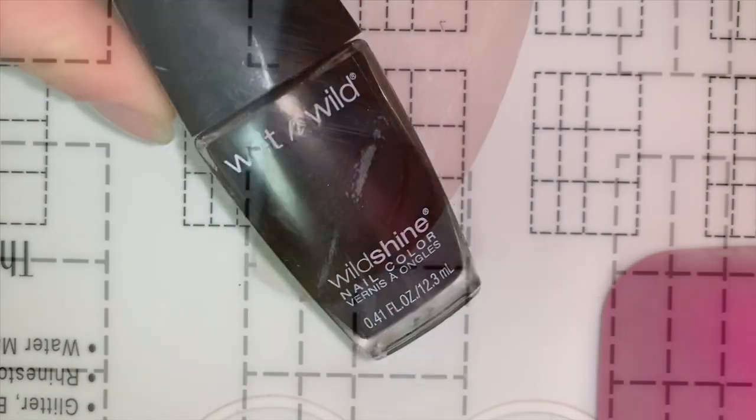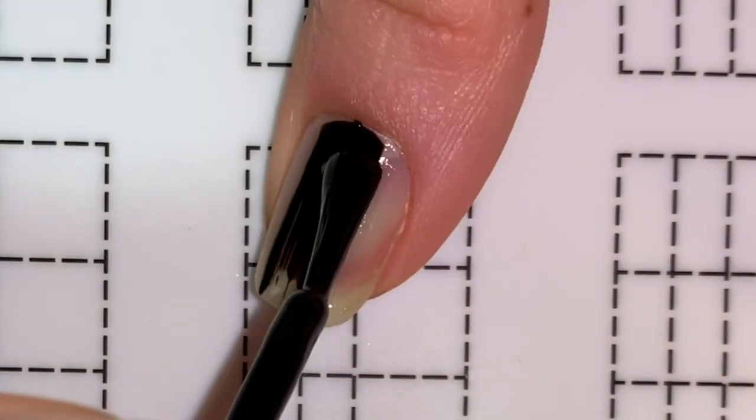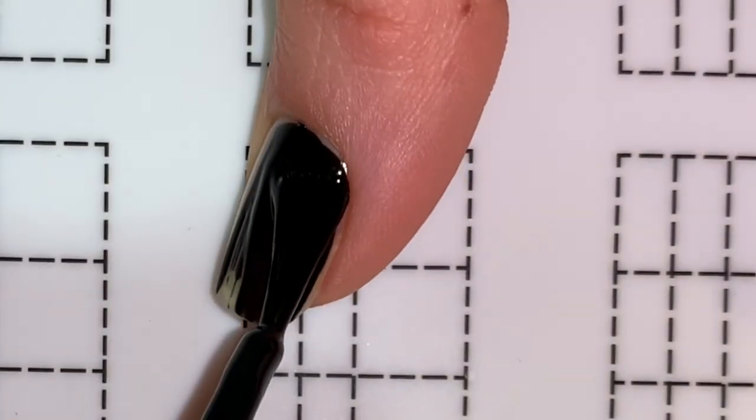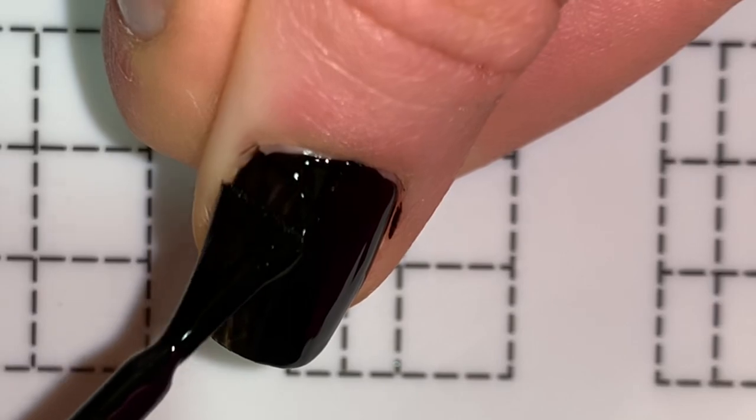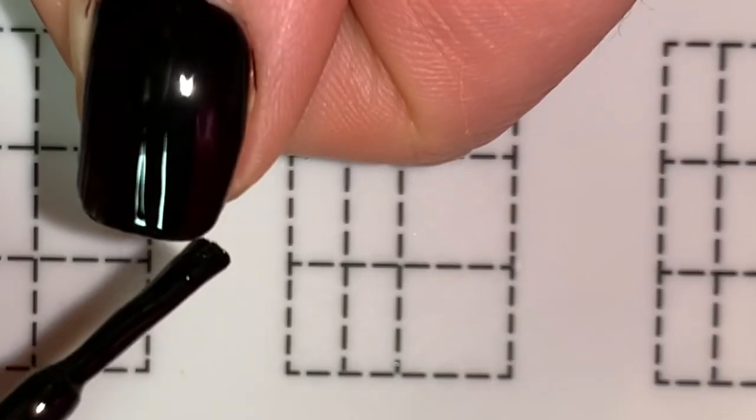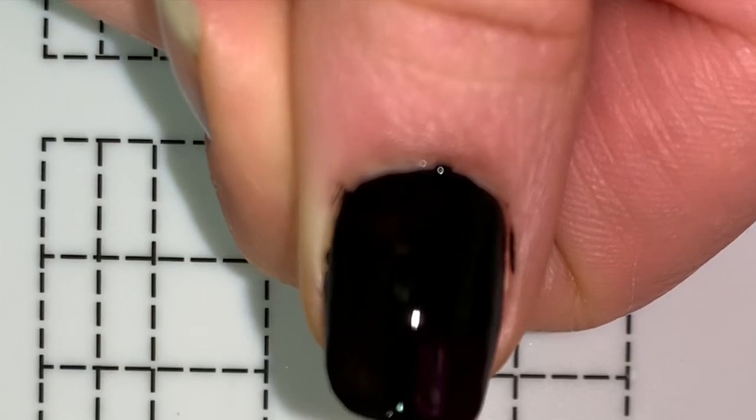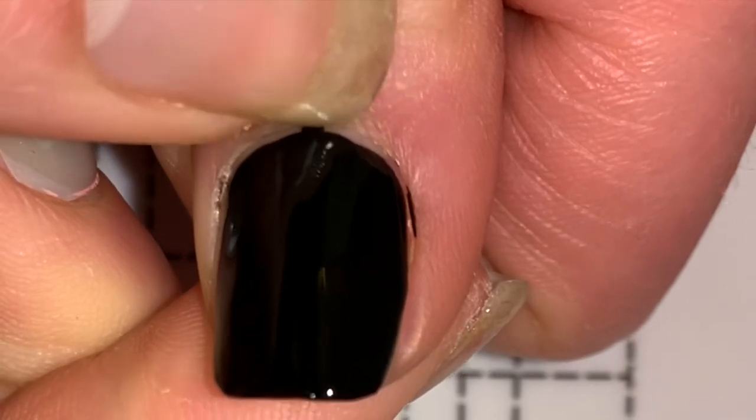Next up, I'm painting black on my thumb and pinky fingernail. I usually don't mess up this much, but with black it always happens. Here's where having long nails comes in handy.